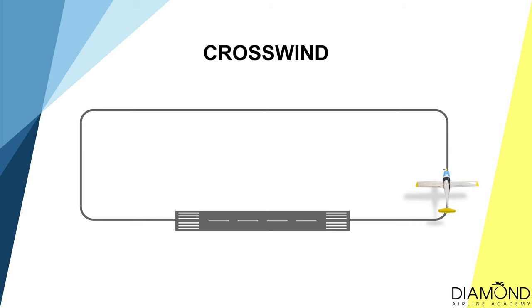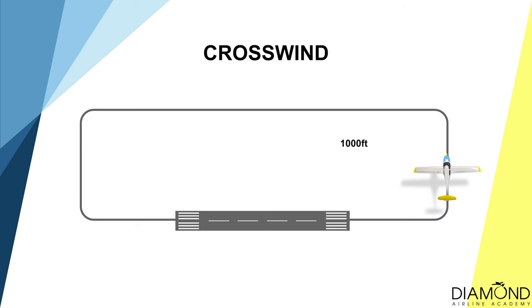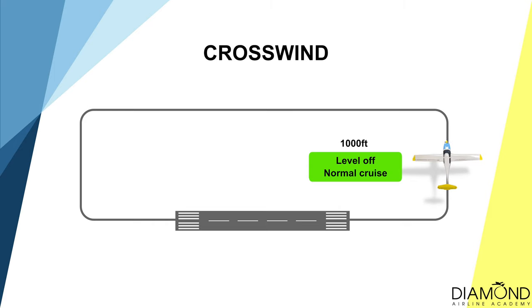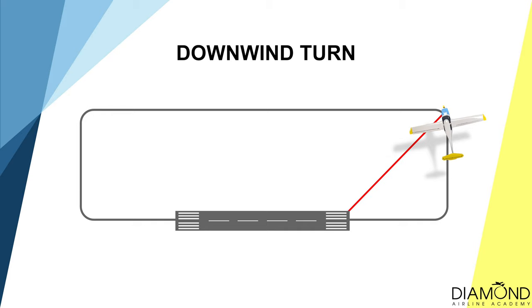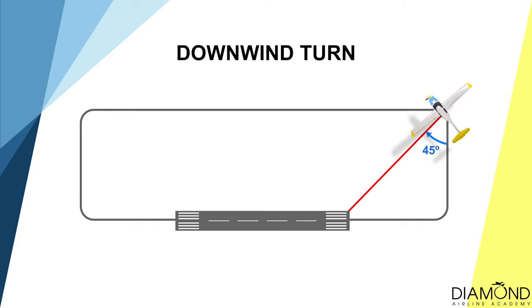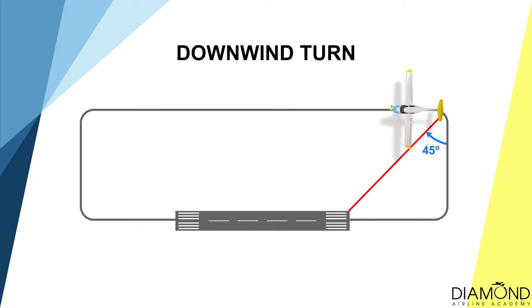When established on crosswind, keep climbing until reaching the circuit altitude of 1,000 feet. Then start to level off and reduce power to normal cruise power setting — 22 inches of manifold pressure and 2,200 RPM. When the runway threshold is 45 degrees behind us, that indicates the end of crosswind and we can start to turn onto downwind.